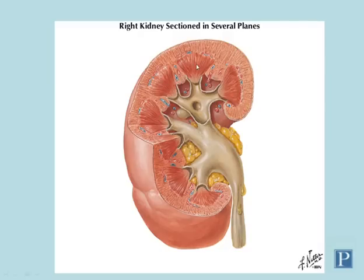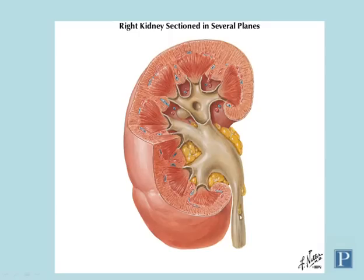The medullary pyramids contain collecting ducts, which drain urine produced by the functional units of the medullary cortex. These collecting ducts empty out into tube-like structures called minor calyces. Minor calyces fuse to form major calyces, and major calyces fuse to form the renal pelvis, which then joins with the ureter to drain urine from the kidneys. Those are the major gross structures of the kidneys.